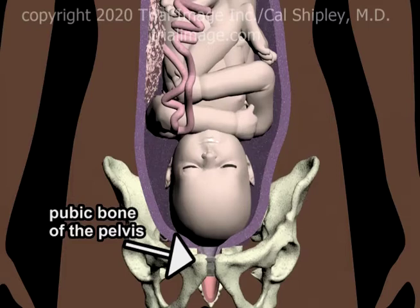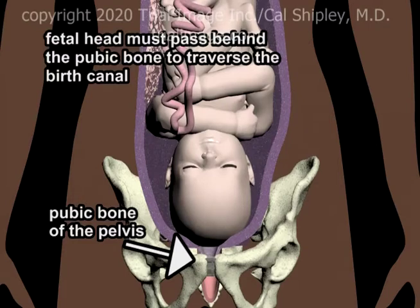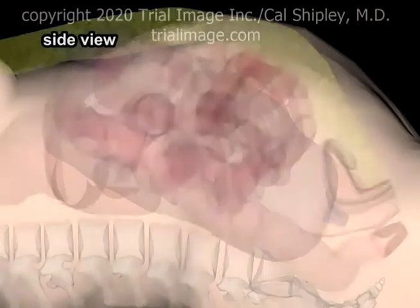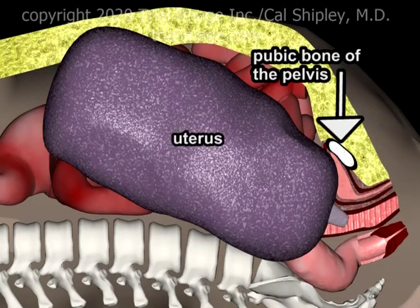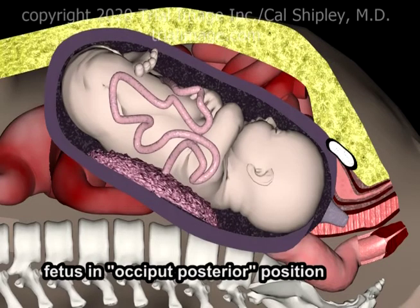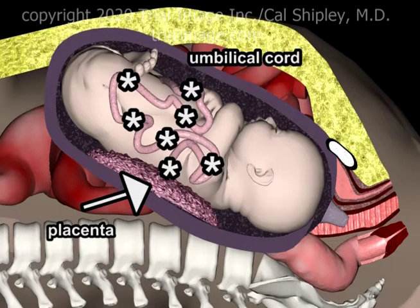The pubic bone of the pelvis is one of the key structures of the birth canal. The fetal head must pass behind the pubic bone in order to successfully traverse the canal. Switching to a view from the mother's right side, we see the pubic bone in cross section, the uterus, and the fetus prior to entering the pelvic inlet. In this example, the fetus is in occiput posterior position, with the back of the head facing towards the mother's spine. The placenta is affixed to the inner wall of the uterus with the umbilical cord attached.